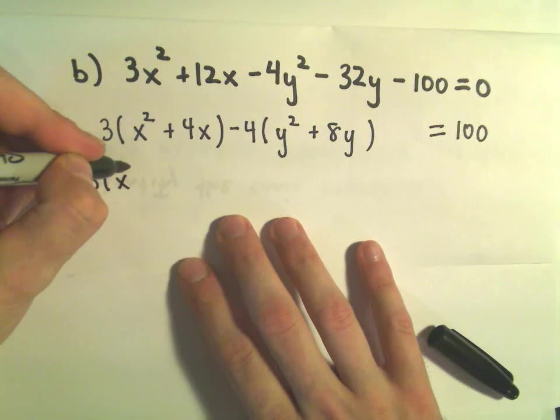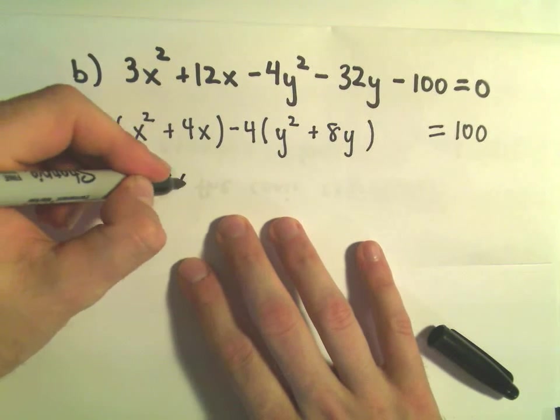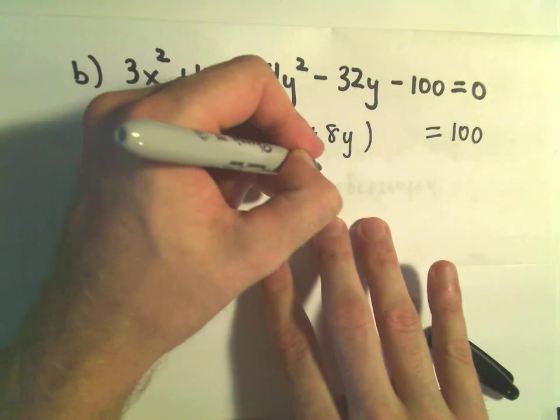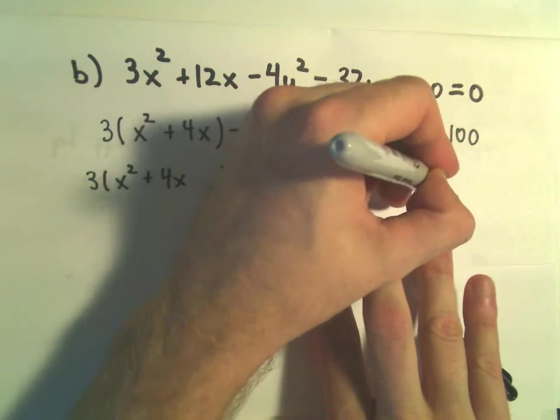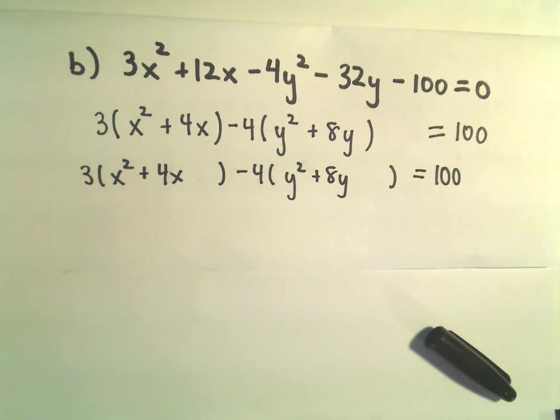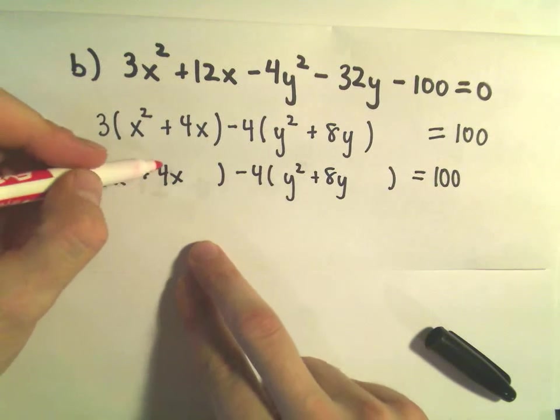Now I'm going to do the completing the square step. I want to make each thing in parentheses a perfect square. I'm going to give myself a little bit of room here. So we look at the linear terms in each set of parentheses.